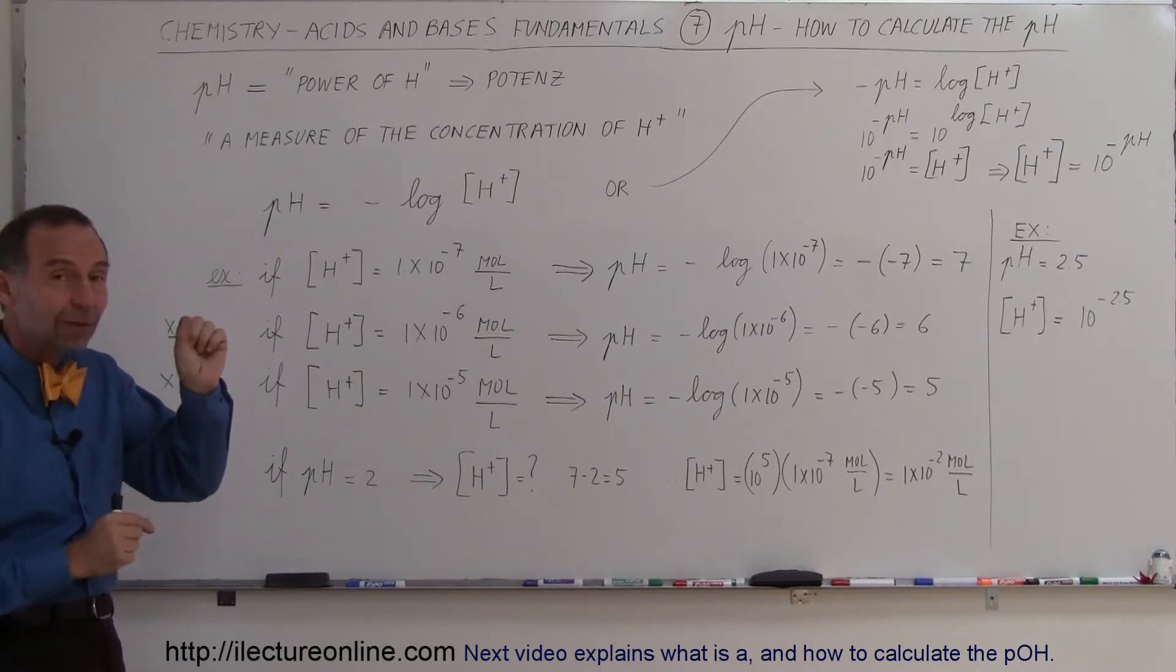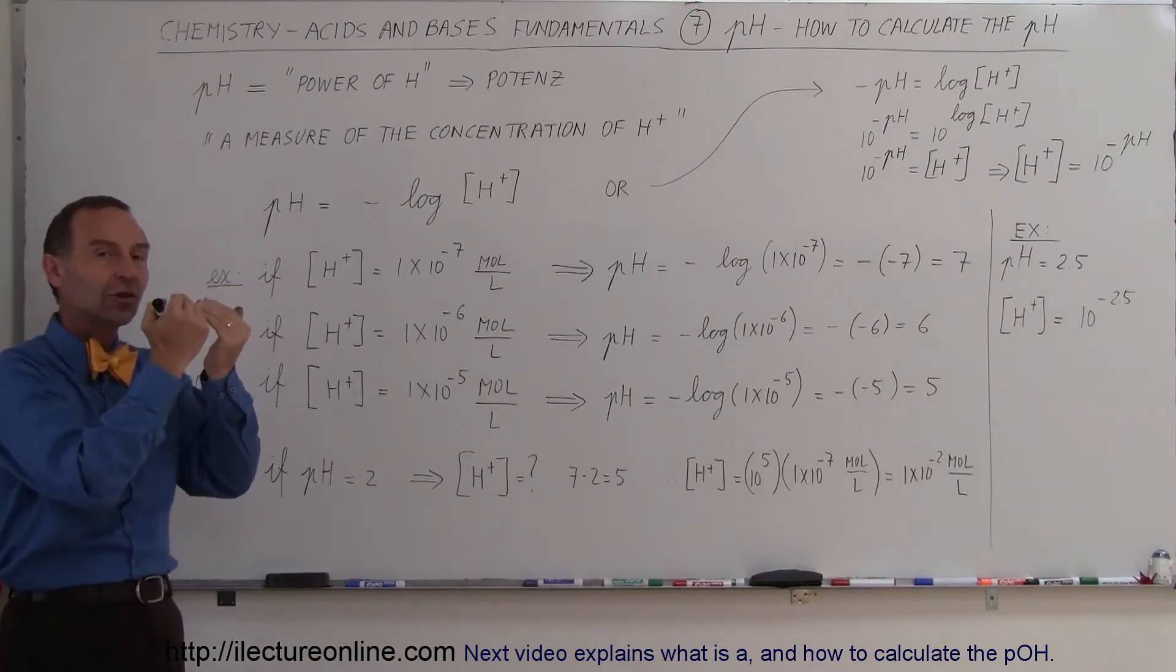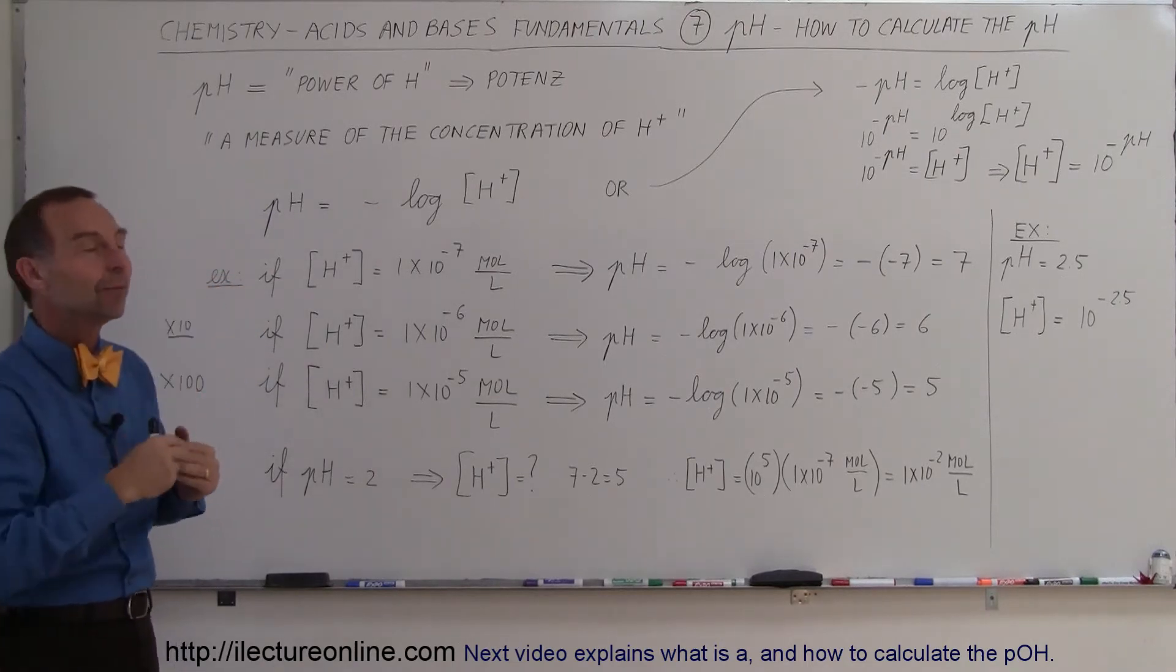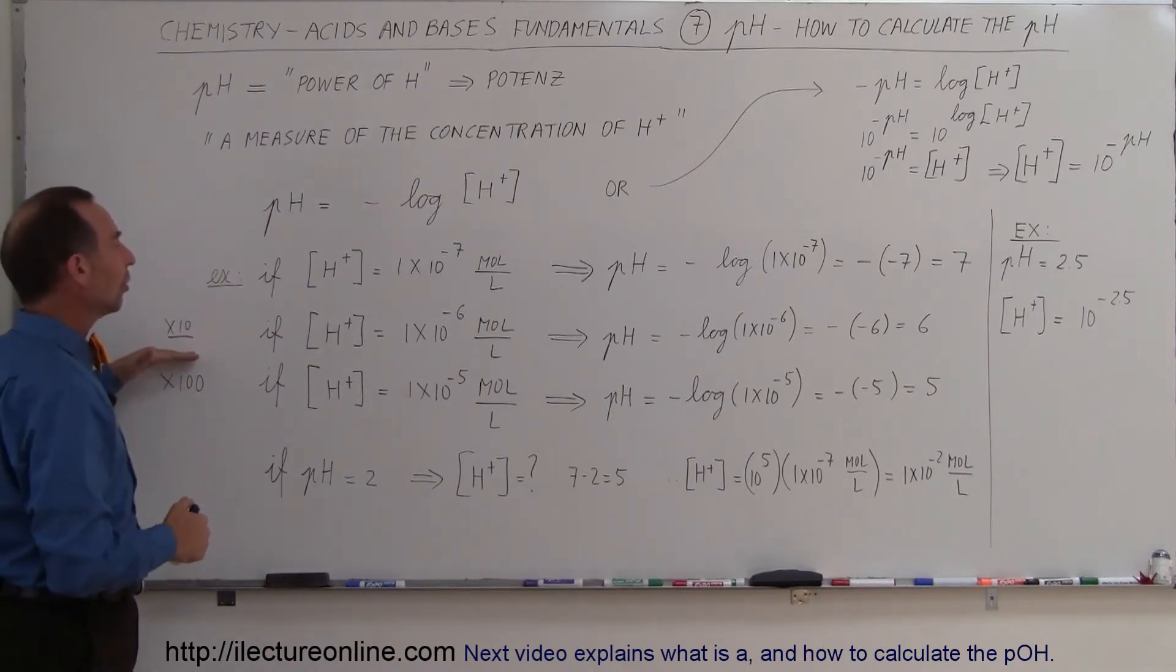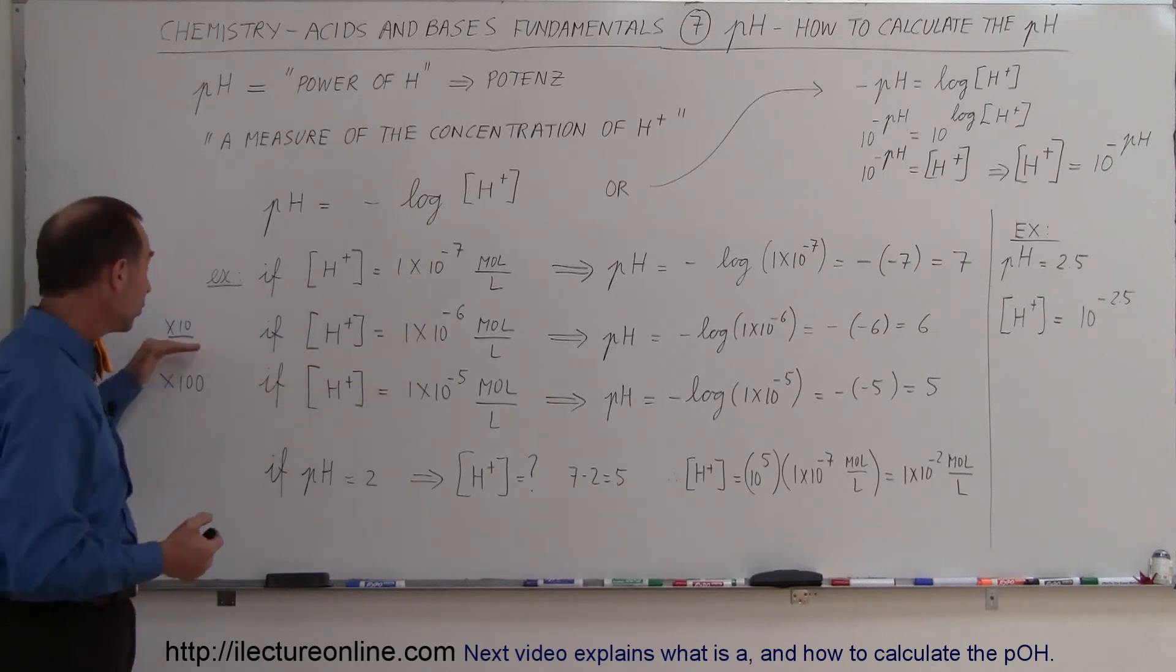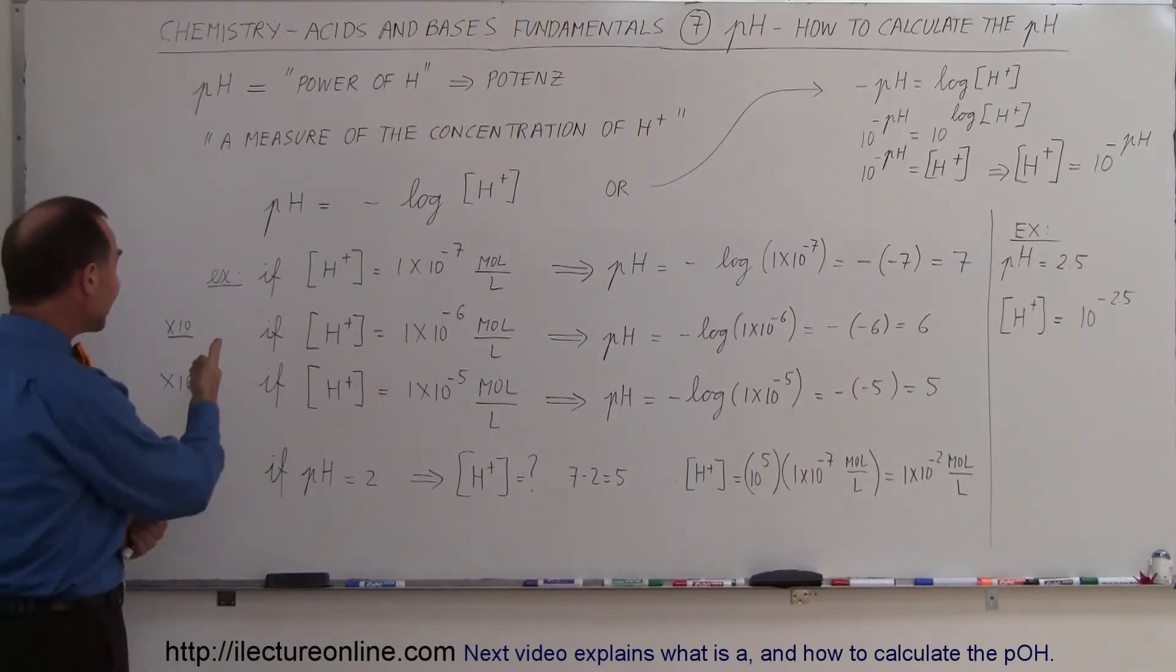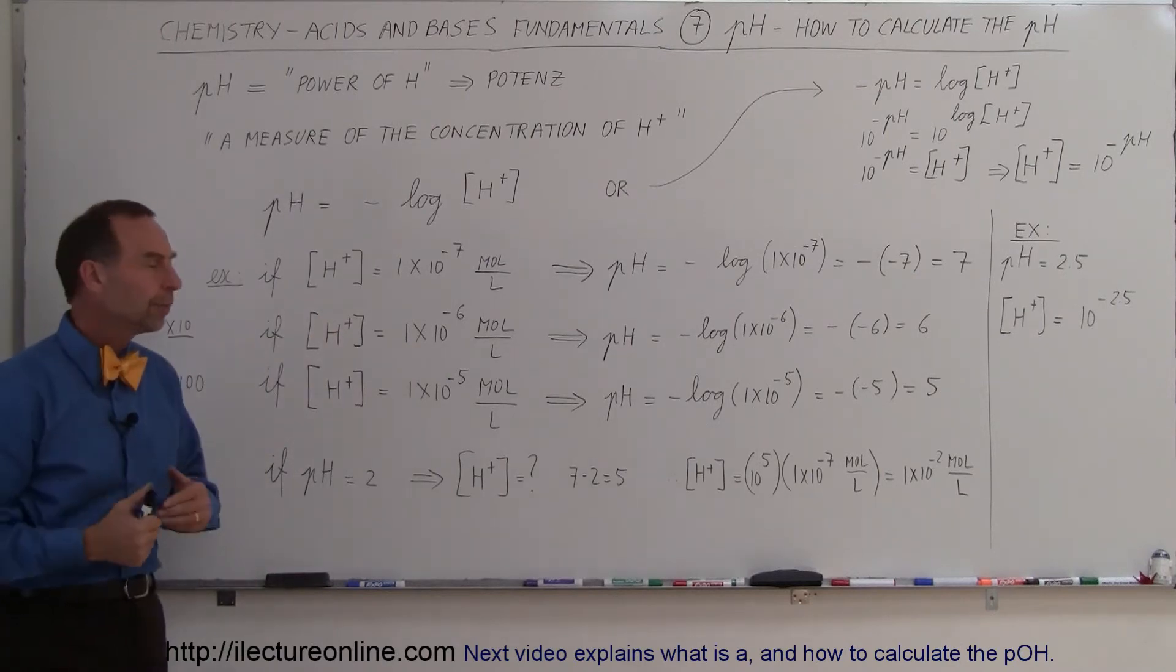Now let's say that the concentration went from 1 times 10 to the minus 7 to 1 times 10 to the minus 6. That's an increase by a factor of 10. There's now 10 times as many hydrogen ions in the solution. So what does that do to the pH? Well, if we calculate the pH, it's minus the log of 1 times 10 to the minus 6.